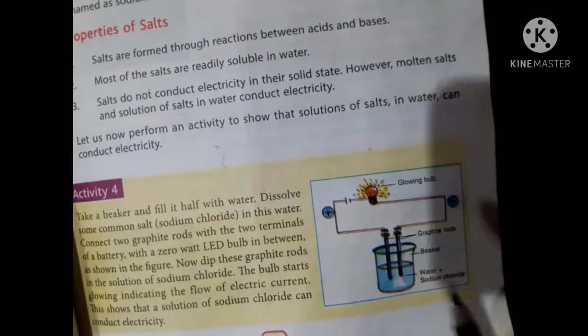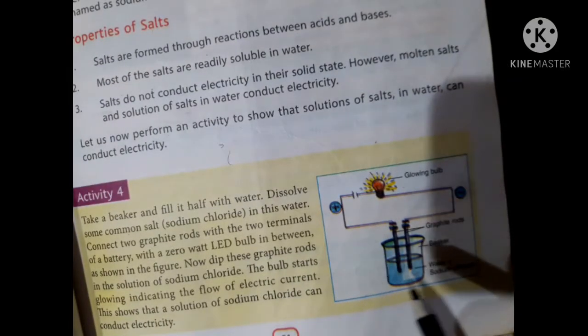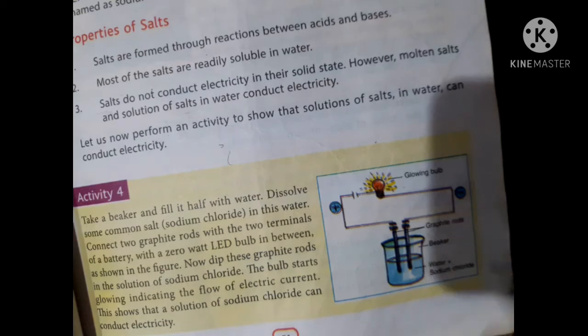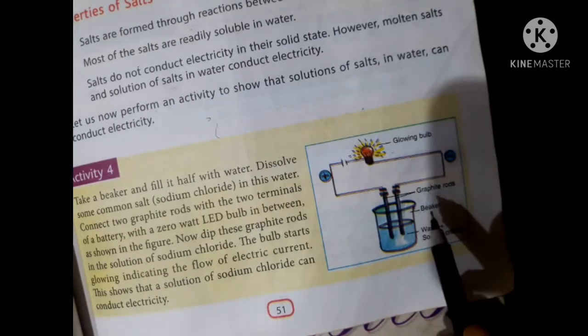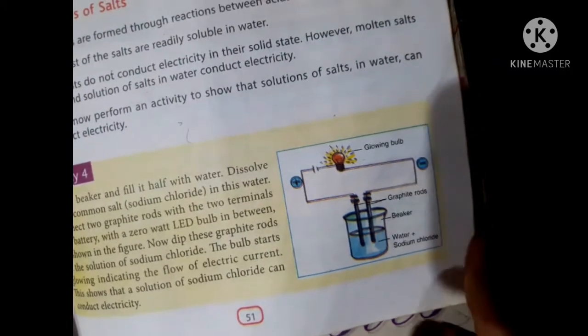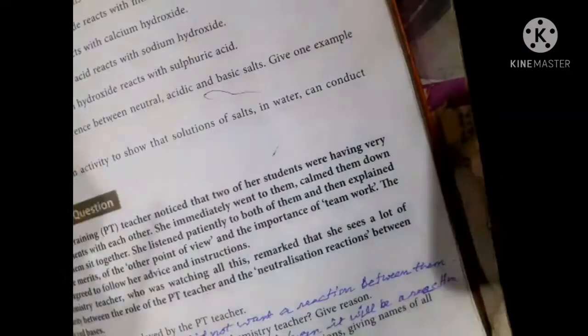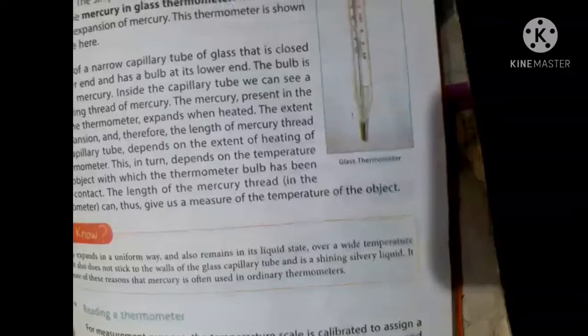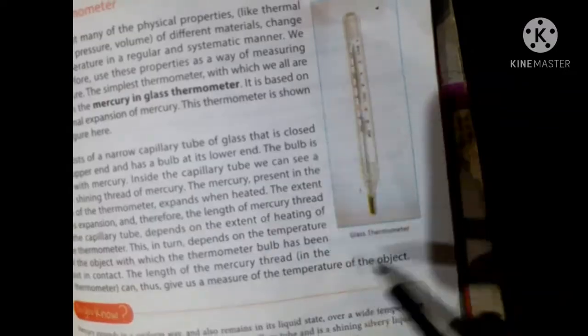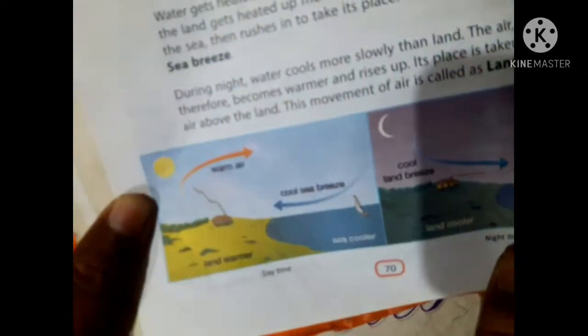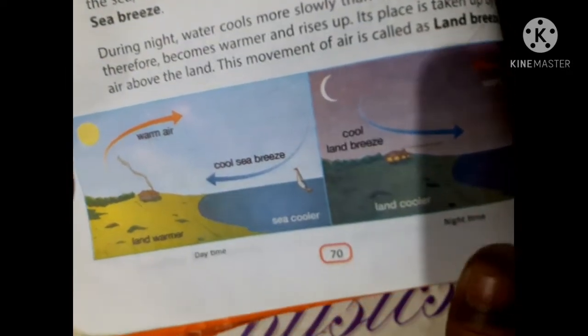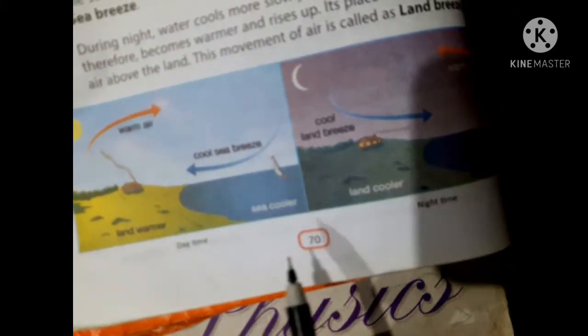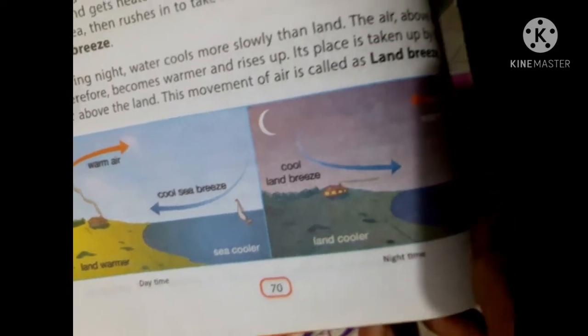Sometimes this figure, electrolysis, you have to show common salt using common salt, glowing bulb, graphite rods, beaker, water plus sodium chloride, thermometer. It may be asked to draw a thermometer reading also. Sometimes land bridge and sea bridge. Sometimes it is asked to show land bridge and sea bridge.